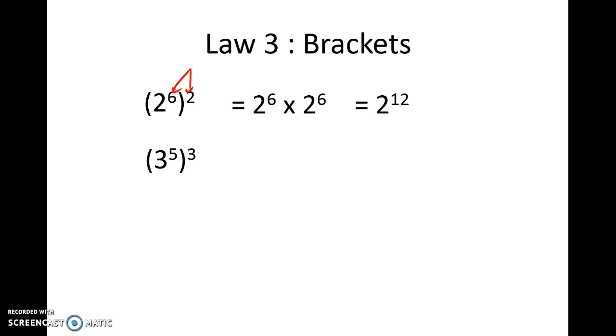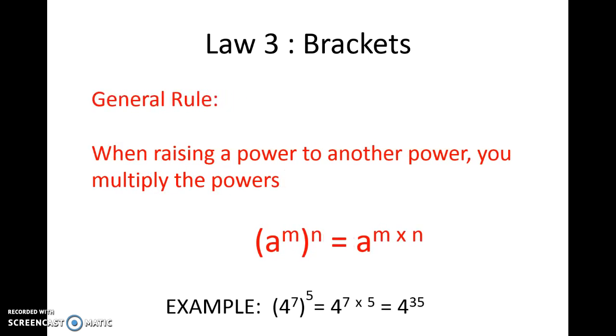3 to the power of 5 all cubed can be written like this, or simplified further as 3 to the power of 15. Writing this formally, our general rule is: when we raise a power to another power, the two powers are multiplied together. So in this instance, a to the power m raised to the power n equals a to the power m times n.